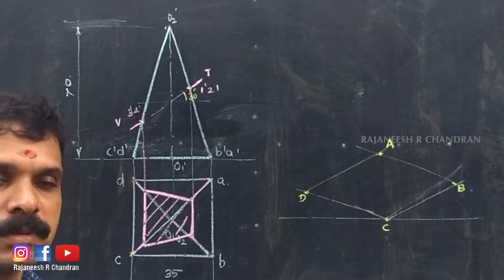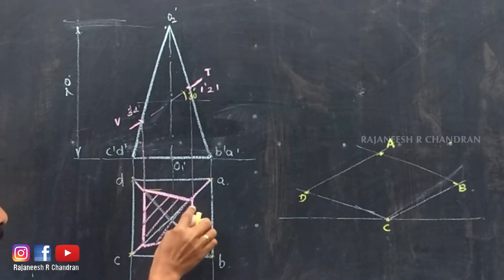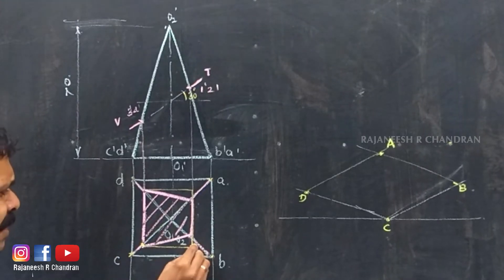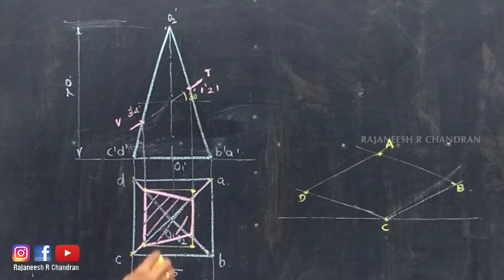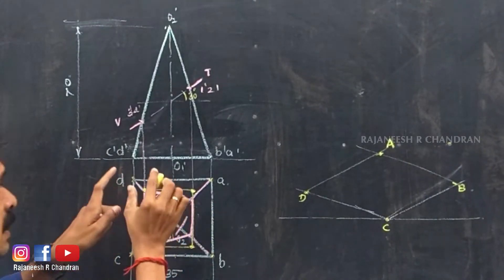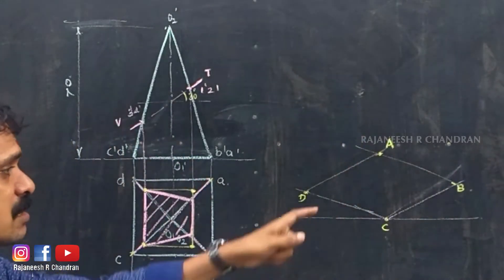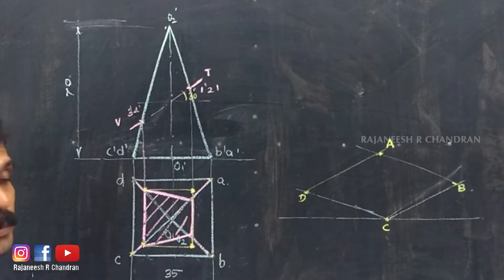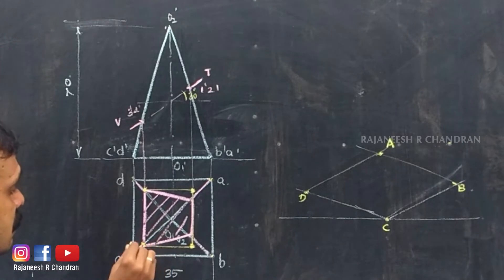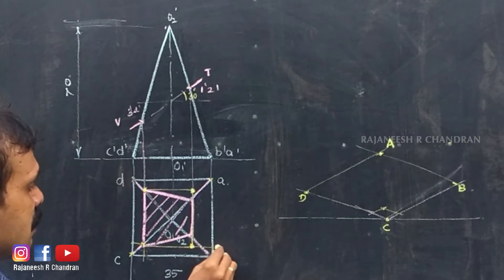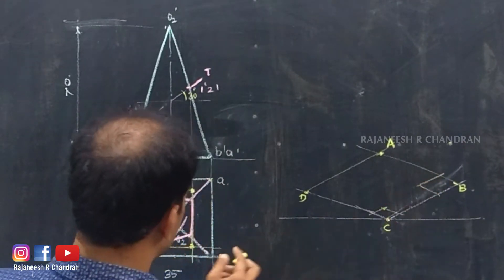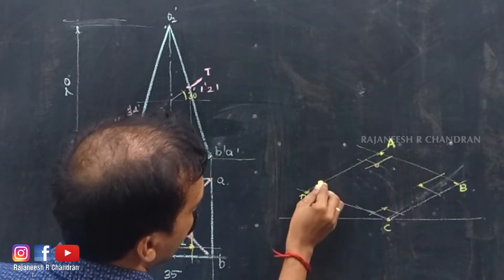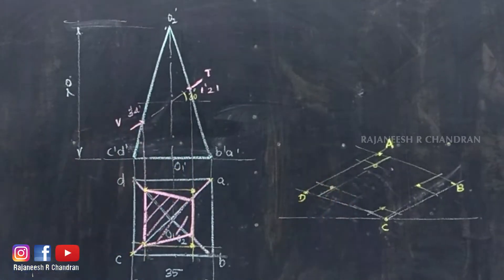Now the next step is to enclose this portion in a rectangle like this, and mark this rectangle here inside this box. These four points are the four inside points and we know how to convert these inside points in an isometric view. Take this distance and locate this point. Similarly, this point can be located. So all four points are now located.